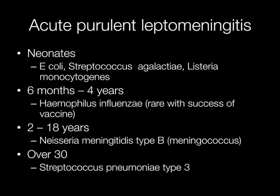Meningitis caused by Neisseria meningitidis type B, or the meningococcus, is perhaps the most frightening type of meningitis and occurs most frequently between the ages of two and 18 years. Over the age of 30, the most frequent type of acute purulent leptomeningitis is caused by Streptococcus pneumoniae type 3, otherwise known as the pneumococcus.